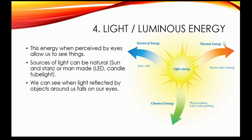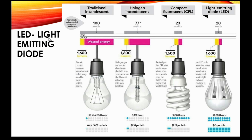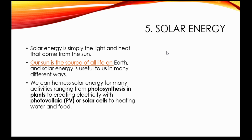Now let's learn about light or luminous energy. This energy is what allows us to see things and gives color to the things around us. Sources of light can be natural, like the sun and stars, or man-made, such as bulbs, candles, and tube lights. When we look at an object, we see it because it reflects light from a light source. LEDs — light emitting diodes — are a type of light bulb that are more expensive than regular bulbs but can last much longer because very little energy is wasted.